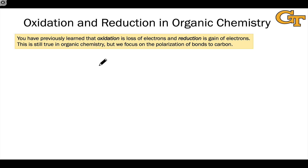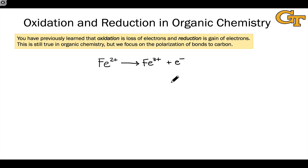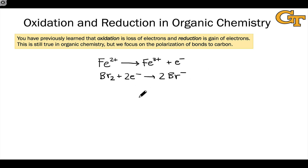Let's start by clarifying exactly what we mean by oxidation and reduction. In your introductory chemistry course, you probably became familiar with these ideas in the context of inorganic, often metal ions. So something like Fe2+ going to Fe3+ and an electron is very clearly an oxidation process since the Fe2+ ion is losing electrons. On the other side, Br2 gaining two electrons to form two Br- is very clearly a reduction of bromine, going from neutral to negatively charged. In organic chemistry, we have to think about things a little differently because formal charge doesn't always tell the whole story.